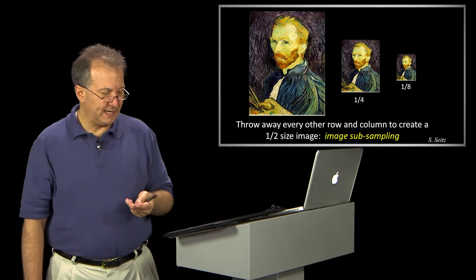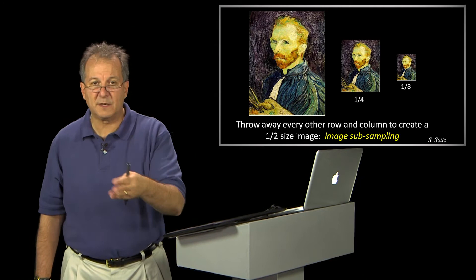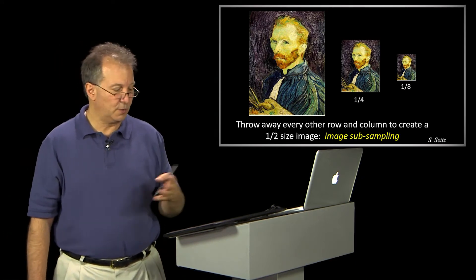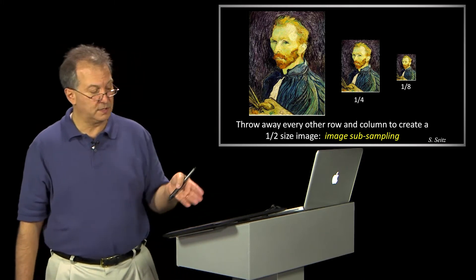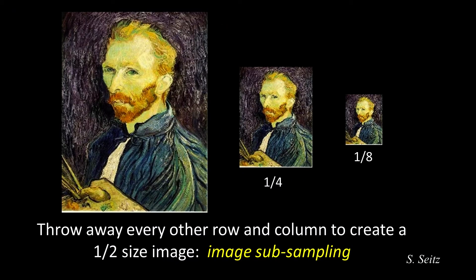We talked about aliasing, and now I want to show you aliasing in terms of image subsampling. Image subsampling is where you just throw away some number of pixels. Here we have a picture by Van Gogh — this is one where you can see his ear. The picture on the left is an original picture. In the middle, I've thrown away every other sample again, both horizontally and vertically. On the right, I've done it again.